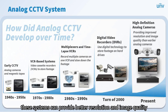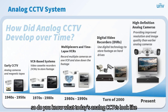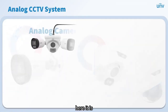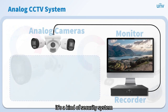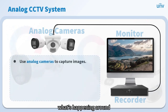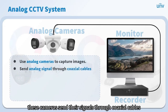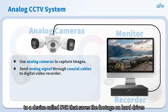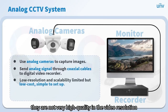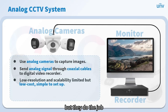These systems can provide better resolution and image quality. Today's analog CCTV is a kind of security system that uses analog cameras to record what's happening around. These cameras send their signals through coaxial cables to a device called DVR that saves the footage on hard drives. They are not very high quality in video resolution, but they do the job.